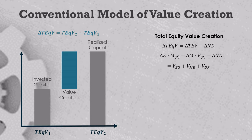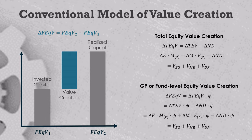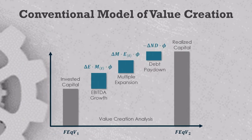If you want to measure value creation for a specific shareholder like a fund or a GP, we need to change the TEQV terms into FECV terms for fund-level equity value. The GP or fund-level value creation formulas are like those for all shareholders, but they include an extra factor — the Greek letter phi — representing some measurement of the GP's ownership percentage. For a fund or GP, you get a value bridge where the bars are generally driven by a change in EBITDA, a change in valuation, and a change in net debt. If you do everything right, the value drivers will add up to the correct number and bridge the gap between invested equity and realized equity.